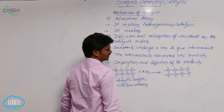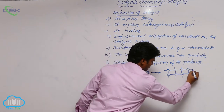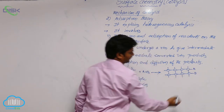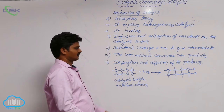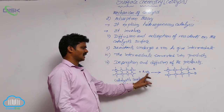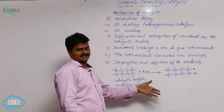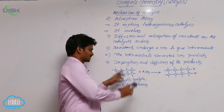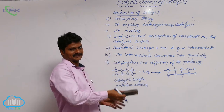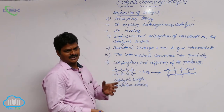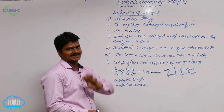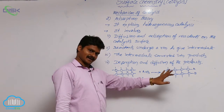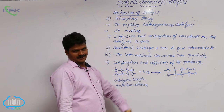So here is the catalyst surface. A and B are adsorbed chemically on the surface of the catalyst. Here A and B are separate reactants. Because of adsorption — because there are free valences on the surface of the catalyst — those free valences attract the reactant molecules. So A and B are chemically adsorbed.